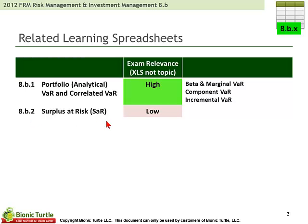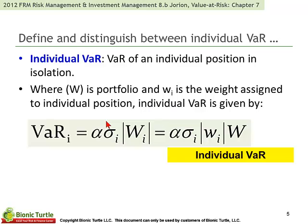Looking at Chapter 7, Individual VAR is now a formal name given to the VAR that we've generally been working with — it's the VAR of an individual position in isolation. Notice this is a good way to get comfortable with the notation in Jorion: VAR of a position is denoted sub-I, as opposed to the portfolio which would be P. We're doing a relative VAR here — there's no drift or expected return. It's just the volatility or sigma of the position multiplied by, or scaled by, the deviate.